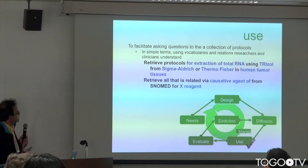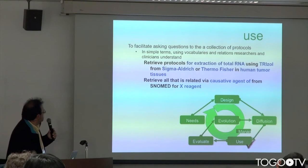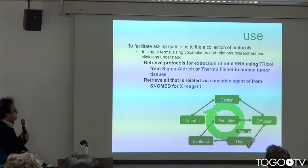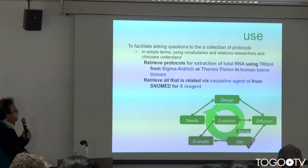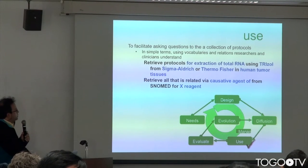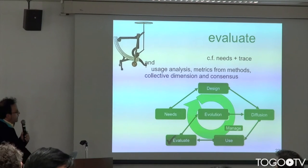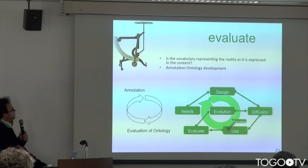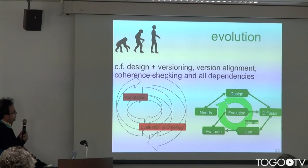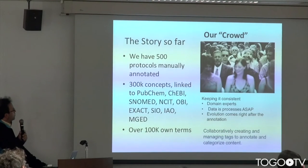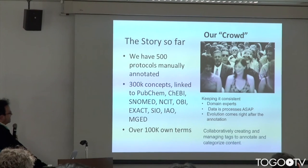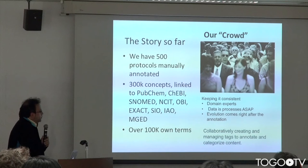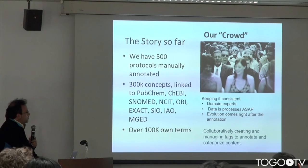In our specific case, the use was to retrieve — to use it as an information retrieval tool. For instance, for expansion of total RNA using a specific reagent, from a specific growth factor in human tumor tissues. We realized that the vocabularies we were automatically getting from things like BioPortal were being evaluated against the annotation of the actual experimental protocols. So by annotating, we were actually evaluating and validating the ontology, and by doing that we were supporting the evolution of the ontology. Our crowd has around 30 to 40 domain experts.